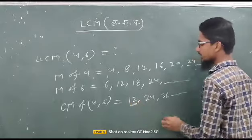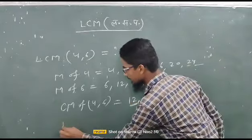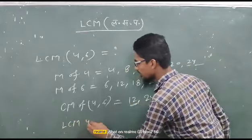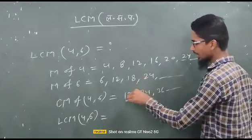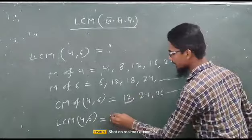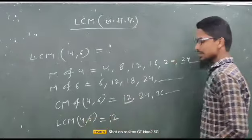We have 12 which is the least common multiple. This is LCM of 4 and 6. The least common multiple of 4 and 6 is 12.